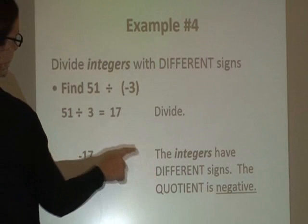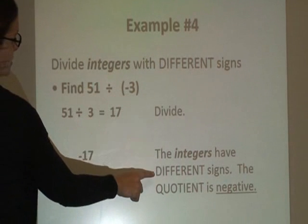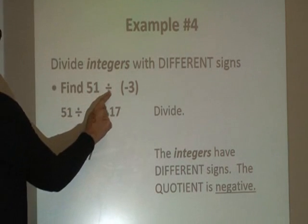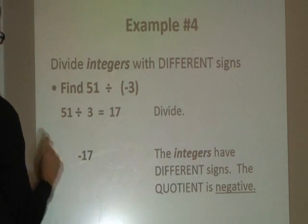The integers have different signs. Positive 51, negative 3. So the quotient is negative. So positive 51 divided by negative 3 is in fact negative 17.